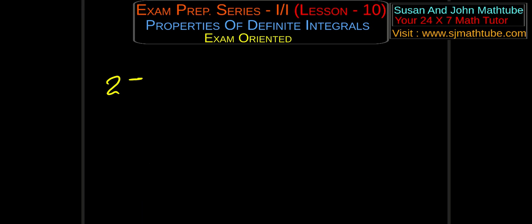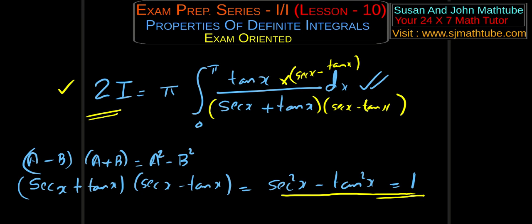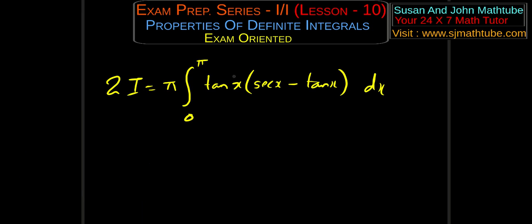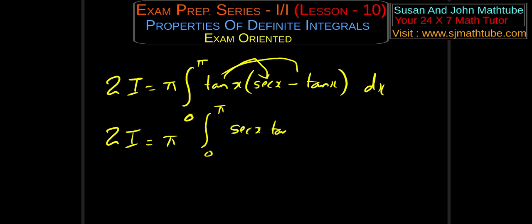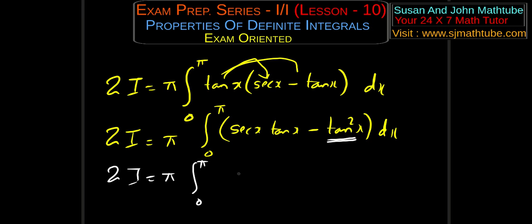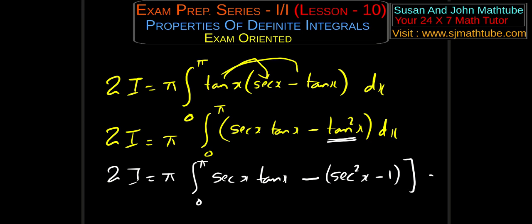So the simplified version is integral from 0 to π with π outside, and the numerator is tan x times (sec x minus tan x) — the denominator is 1, so we can ignore it. Opening the bracket: 2I equals π times integral from 0 to π of (sec x·tan x minus tan²x) dx. We integrate tan²x by converting it using tan²x equals sec²x minus 1.